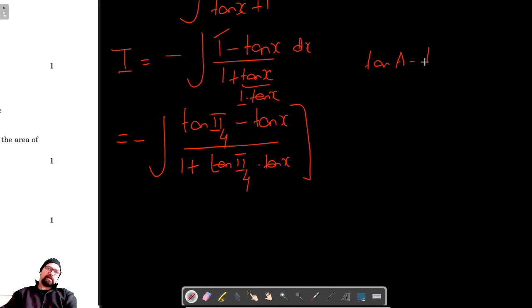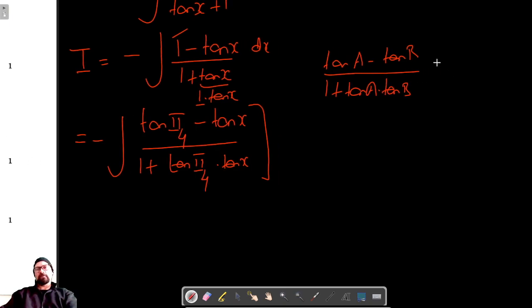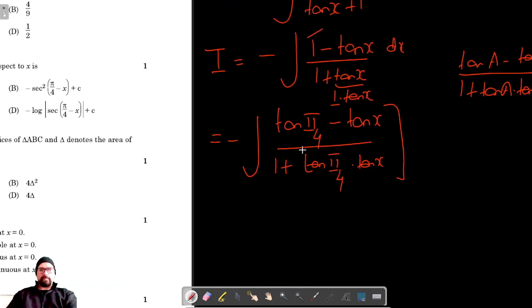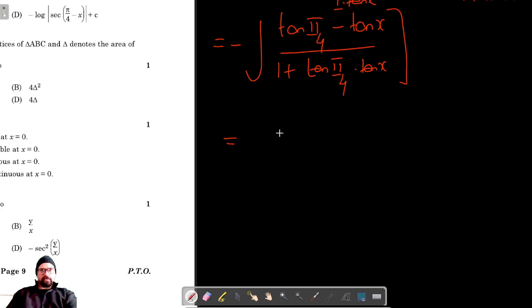This formula is (tan a - tan b)/(1 + tan a * tan b) which equals tan(a - b). So this is now the integration of tan(a - b), which is tan(x) dx.